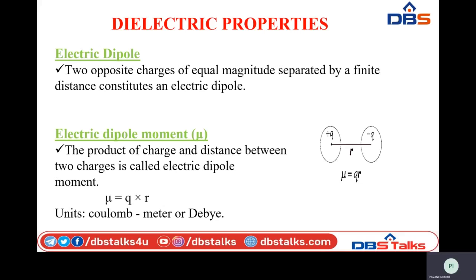Each electric dipole has a certain dipole moment. Whenever we keep a dielectric in an electric field, movement of charge carriers takes place. The product of the charge and the distance between them is nothing but the electric dipole moment — defined as the product of charge and distance between two charges at the two plates of the capacitor. The dipole moment is denoted by the letter mu (μ = q × r), and its general units are coulomb-meter.